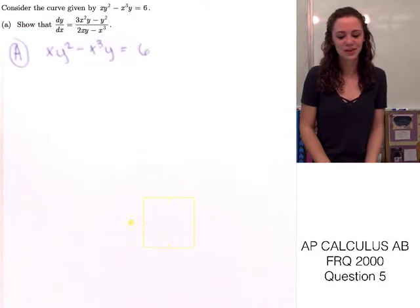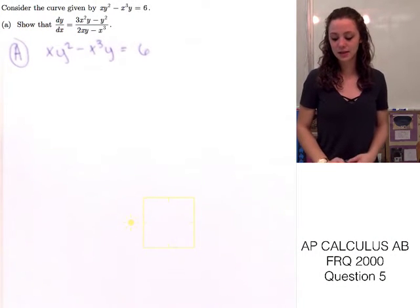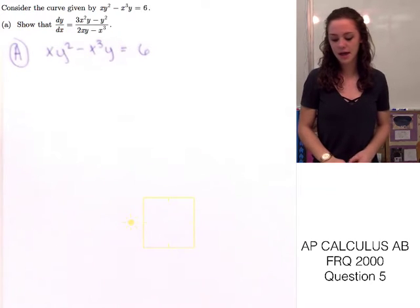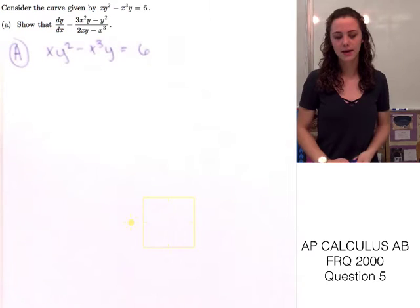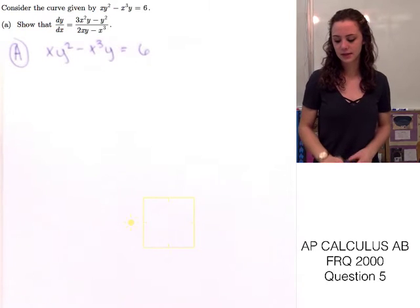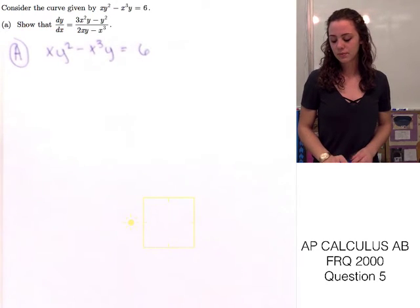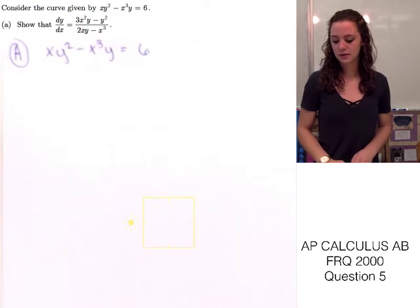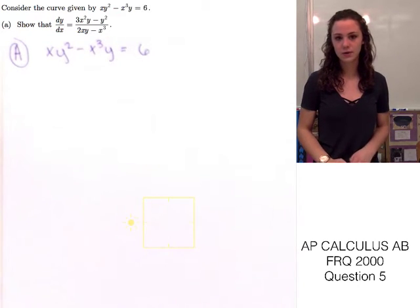Today I'm going to be doing a question from the 2008 AP Calculus test. The question says: consider the curve given by xy² minus x³y equals 6. Part A asks us to show that the derivative of this function is 3x²y minus y² all over 2xy minus x³.